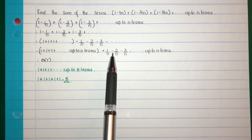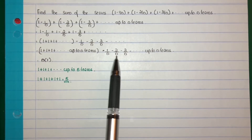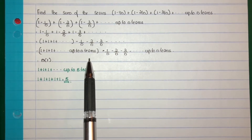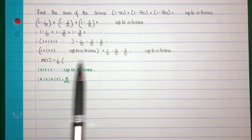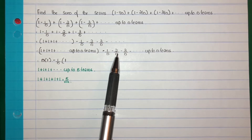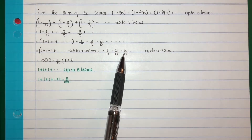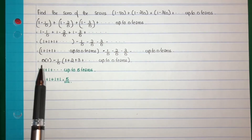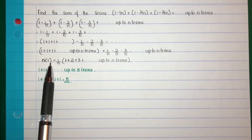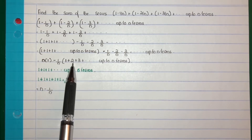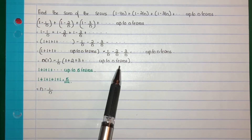Next, if we take minus 1/n as the common factor outside, then: minus 1/n outside, remaining plus 1; minus 1/n outside, remaining plus 2; next plus 3, and so on up to n terms. So the expression becomes n minus 1/n into (1 plus 2 plus 3 plus etc.) up to n terms.